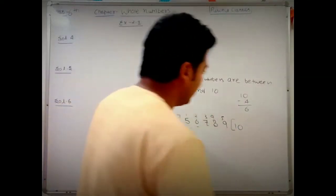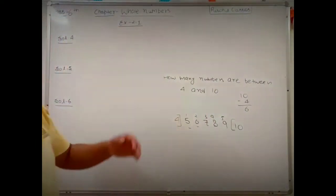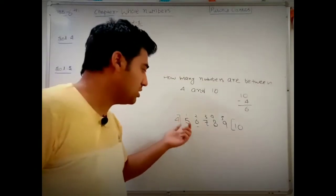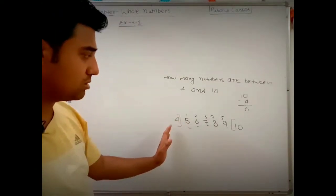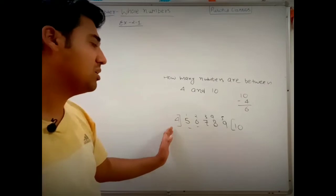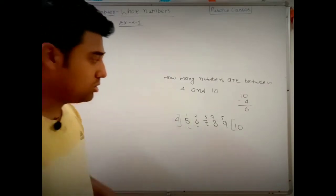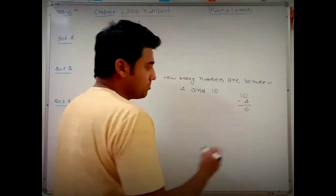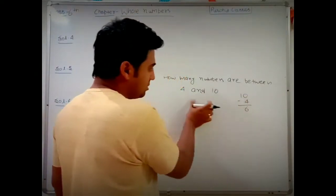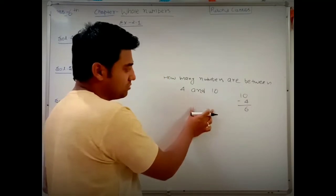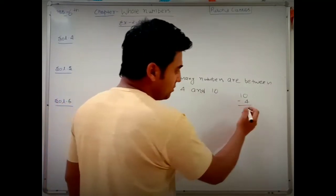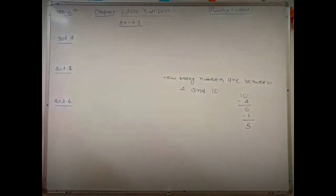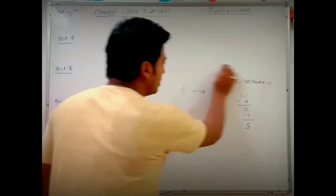The reason the subtraction gives 6 instead of 5 is that subtracting 10 minus 4 does not eliminate 4 itself. So when using direct subtraction to find numbers between two values, you must subtract 1 more from the result to get the correct answer.